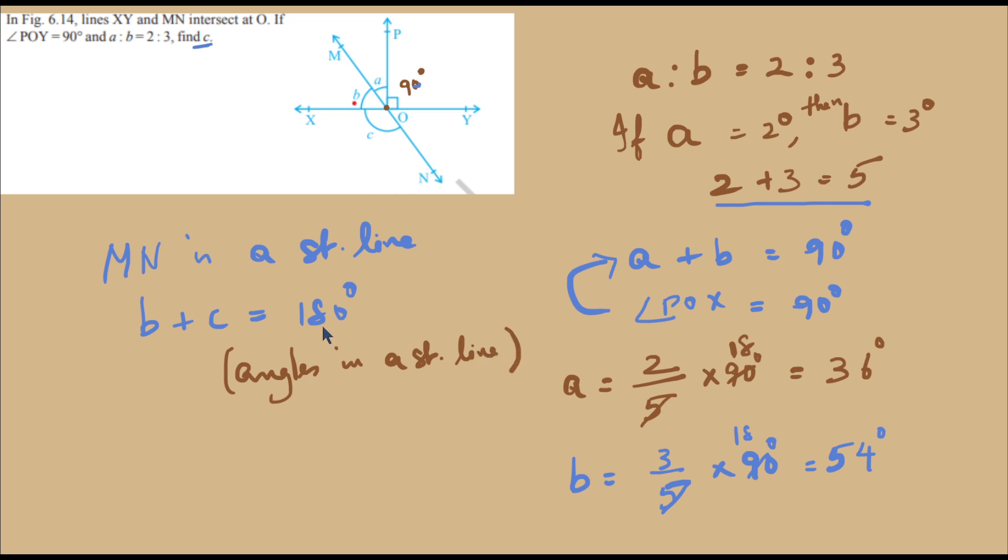If B plus C equals 180, then C equals 180 minus B. We found that B is 54 degrees, so C equals 180 minus 54. That's 10 minus 4 is 6, 7 minus 5 is 2, giving us 126. So angle C equals 126 degrees.